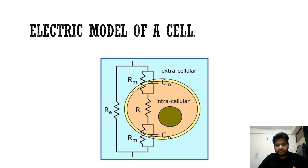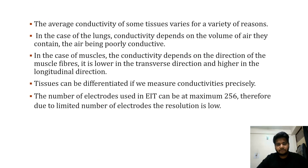Based on these measurements, we can find the conductivity of a cell. We can conclude that the average conductivity of some tissues can vary for a variety of reasons. For example, in the case of lungs, conductivity depends on the volume of air they contain because air is poorly conductive.